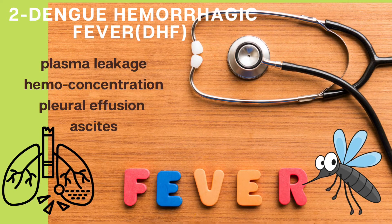Hemorrhagic manifestations include hemoconcentration — a 20% or greater rise in hematocrit above the baseline — as well as pleural effusion or ascites.